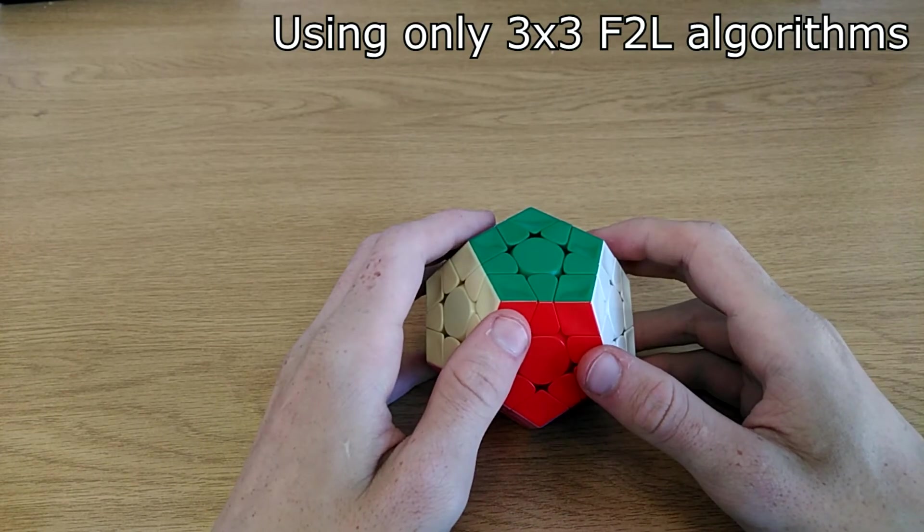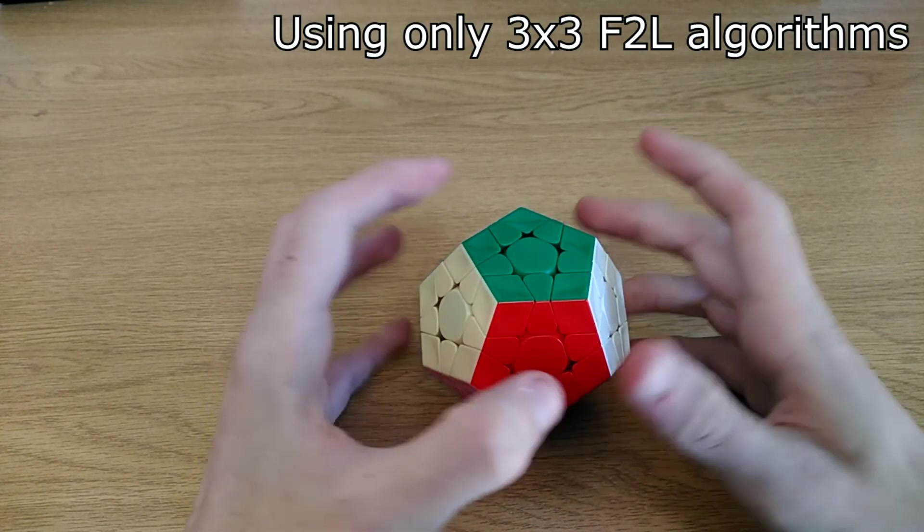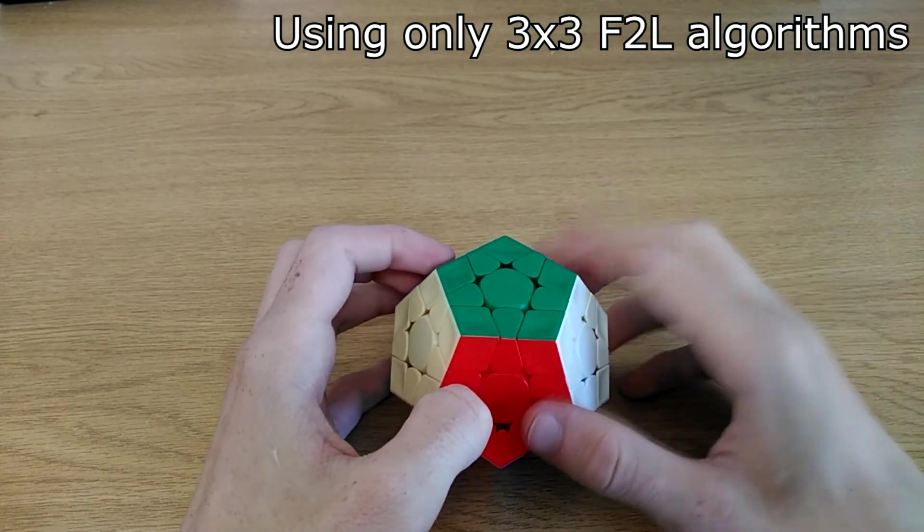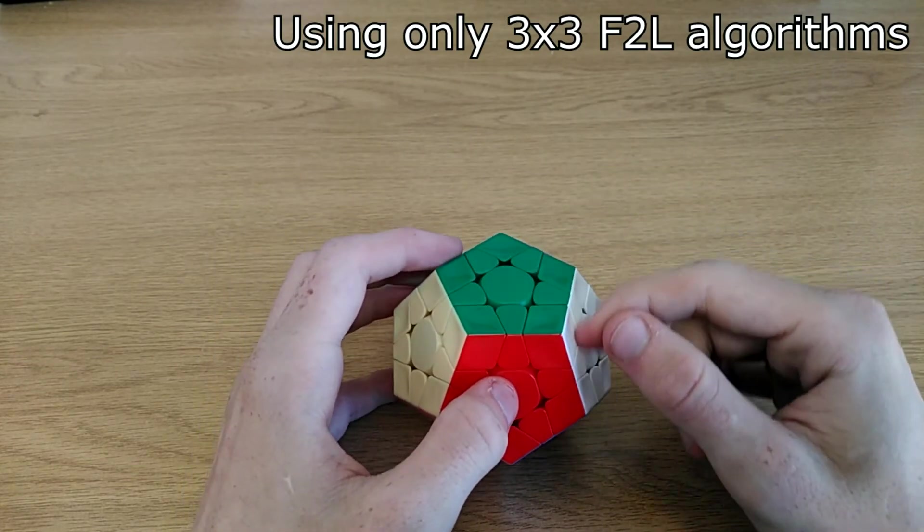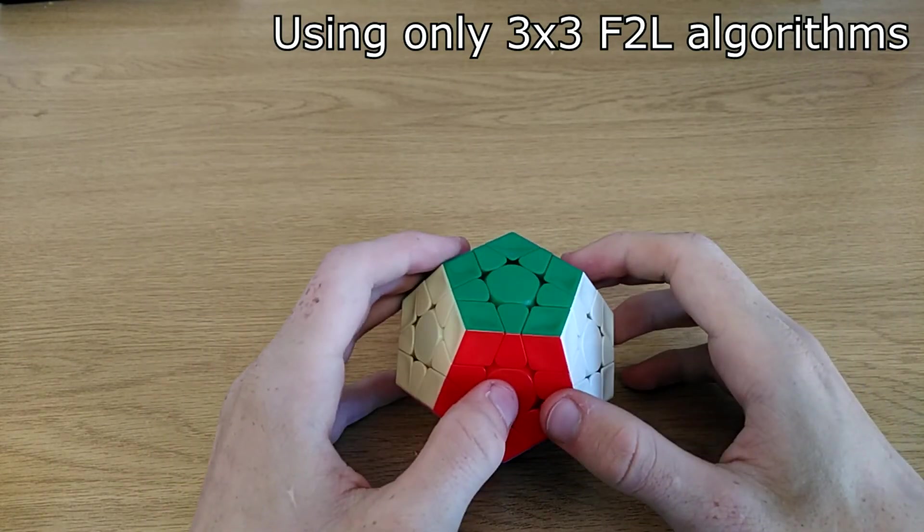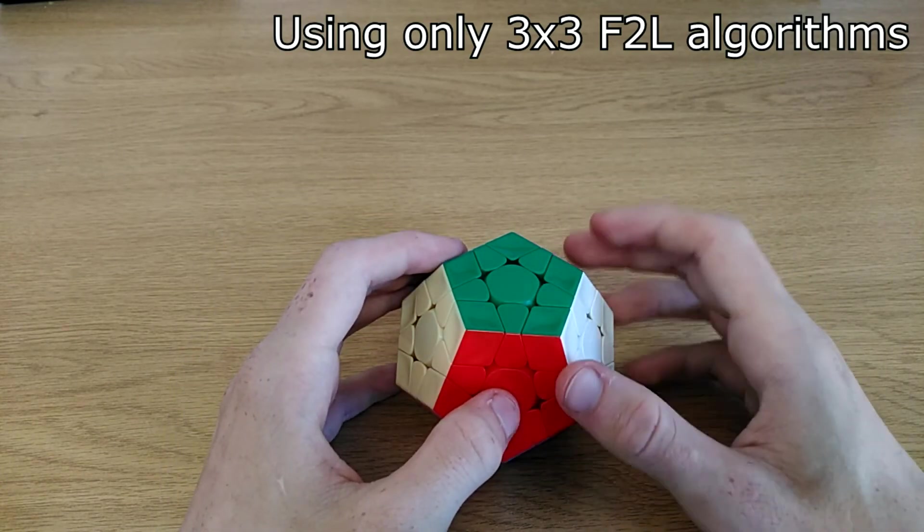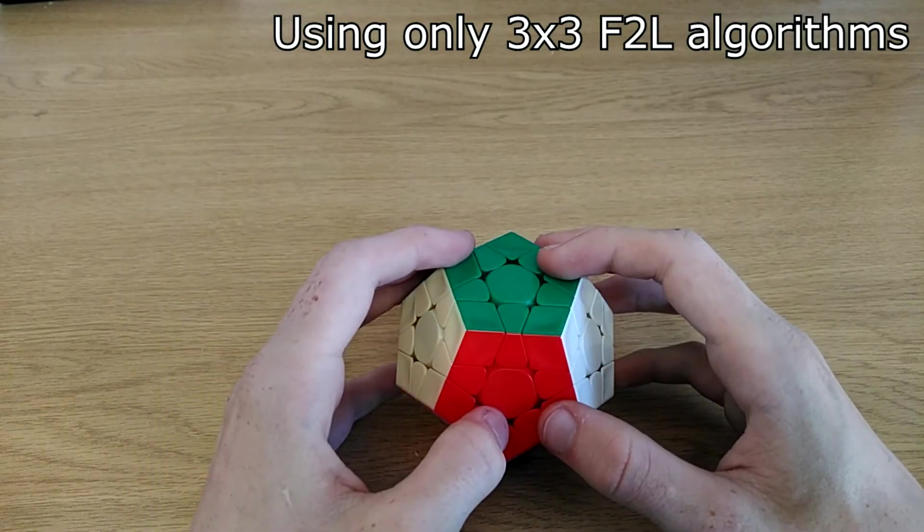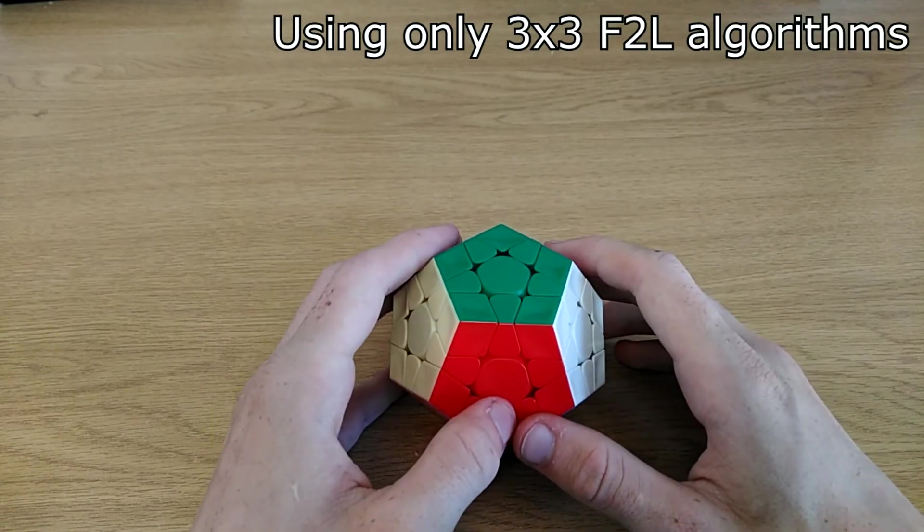Number 5: Using only 3x3 F2L algorithms. There's a video where I explain the most important mindset you need to have to improve with Megaminx, and you can watch the video right here. But in short, all it says is that you need to think of a Megaminx as a new puzzle and not as a 3x3. 3x3 F2L is very limited because it only has 6 sides, whilst a Megaminx has 12 sides, so you have more freedom with what you can do to pair pieces. So I would advise you to forget 3x3 and learn new ways to pair pieces.